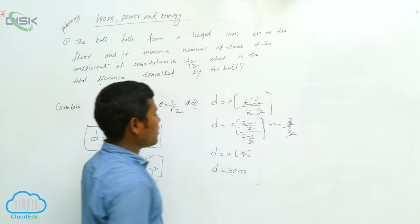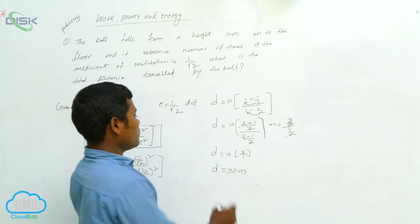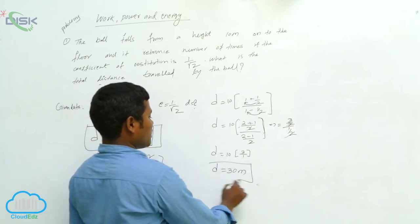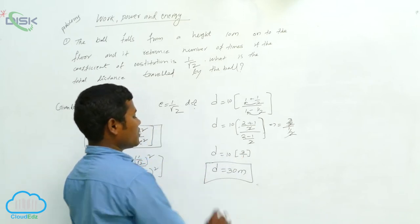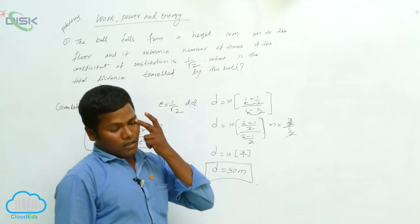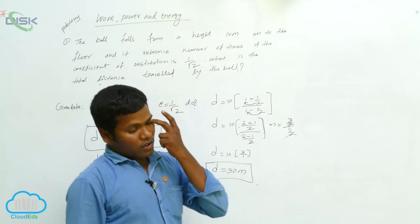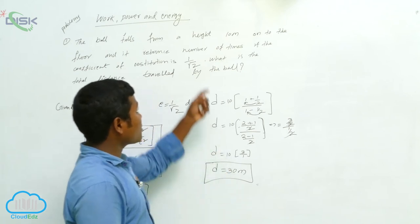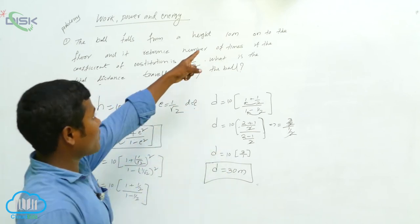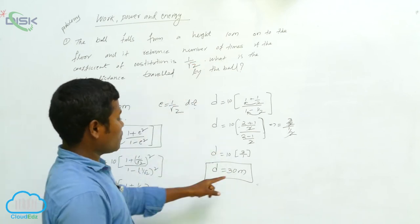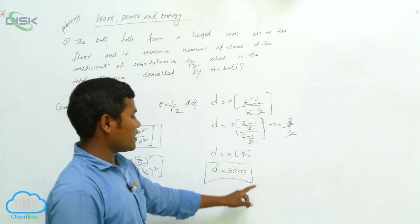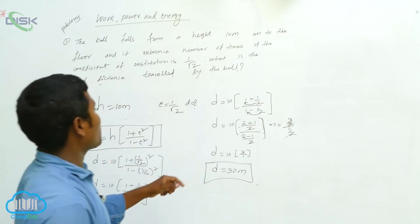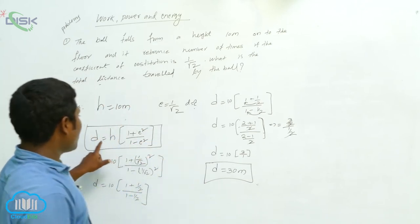So we get 3 by 1, meaning 3 times 10 = 30. The total distance is 30 meters. We write meters because the problem itself gives the height in meters, so we use the MKS unit system accordingly.